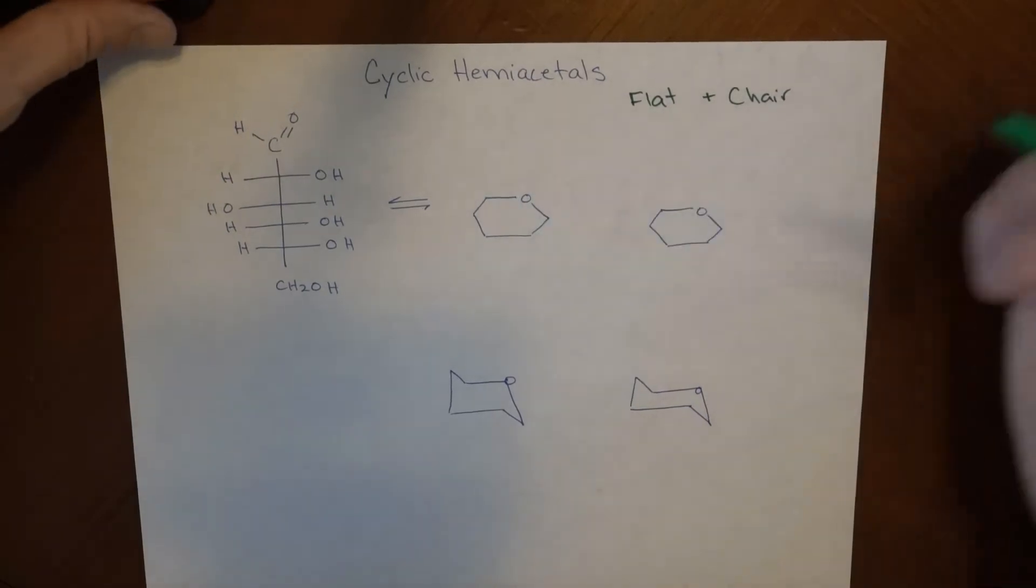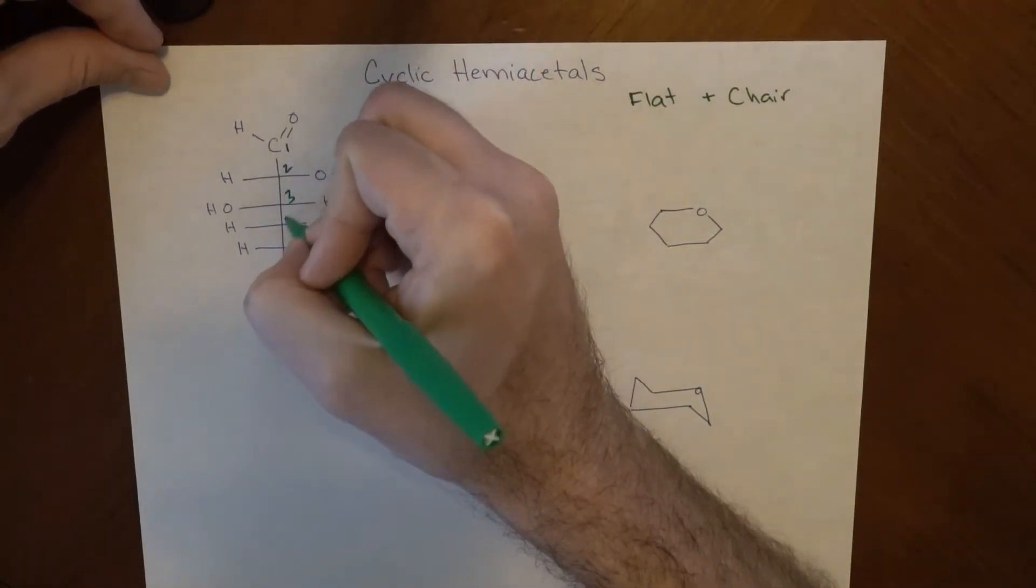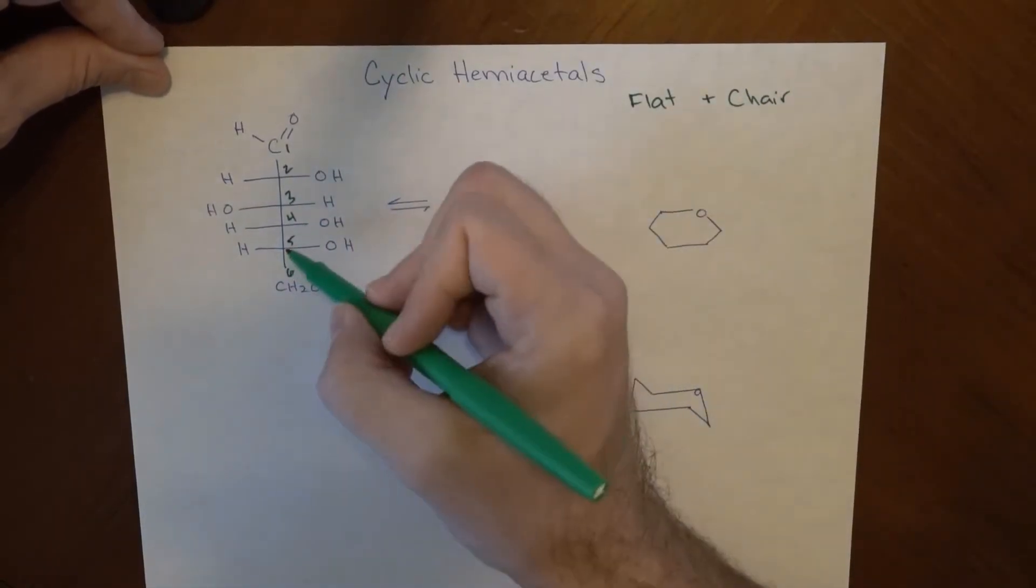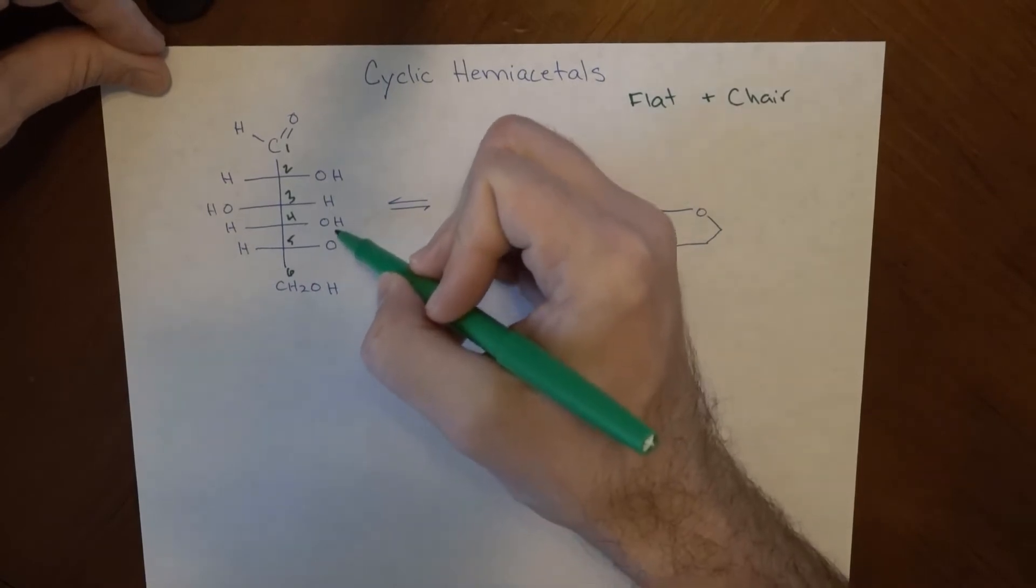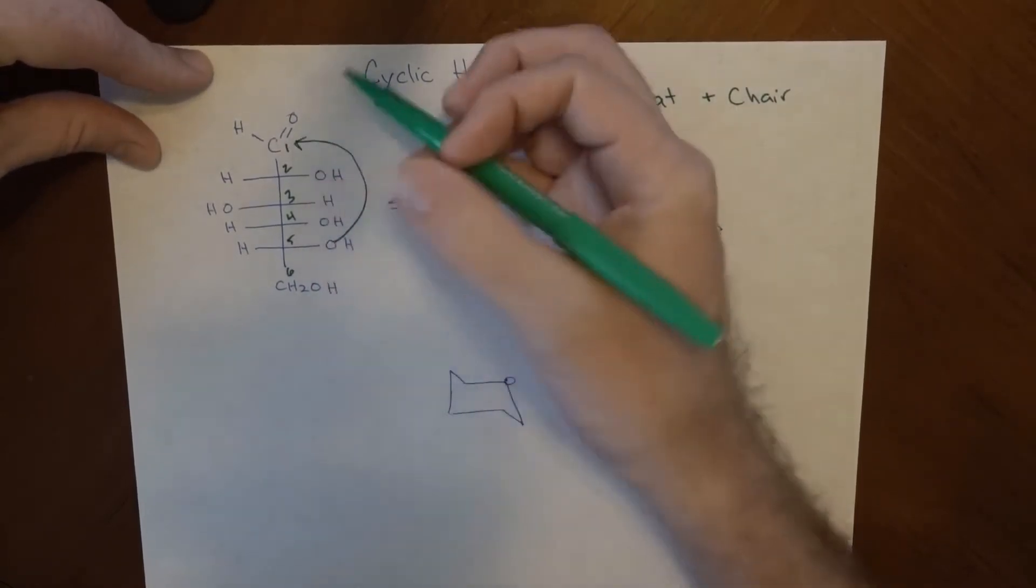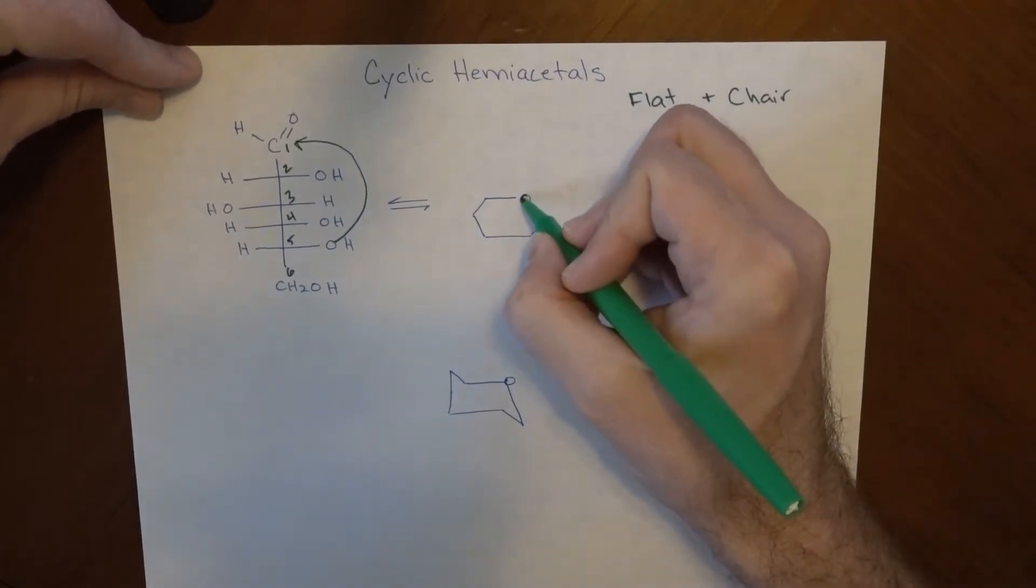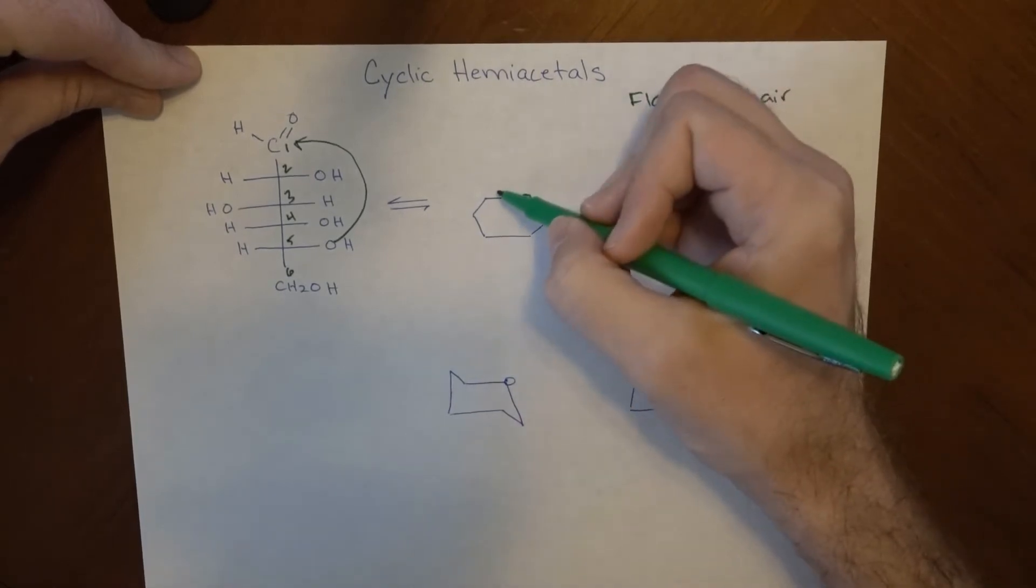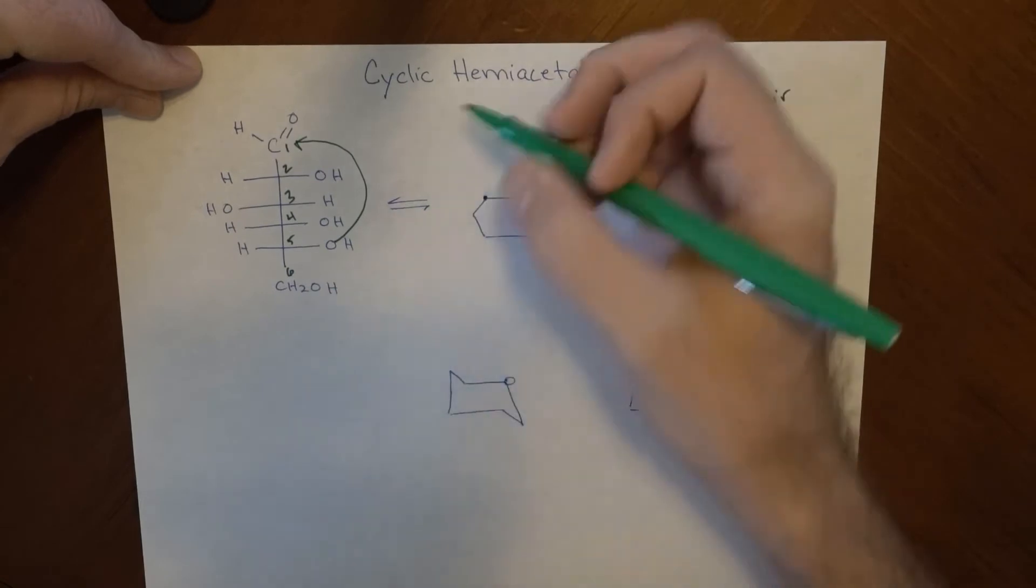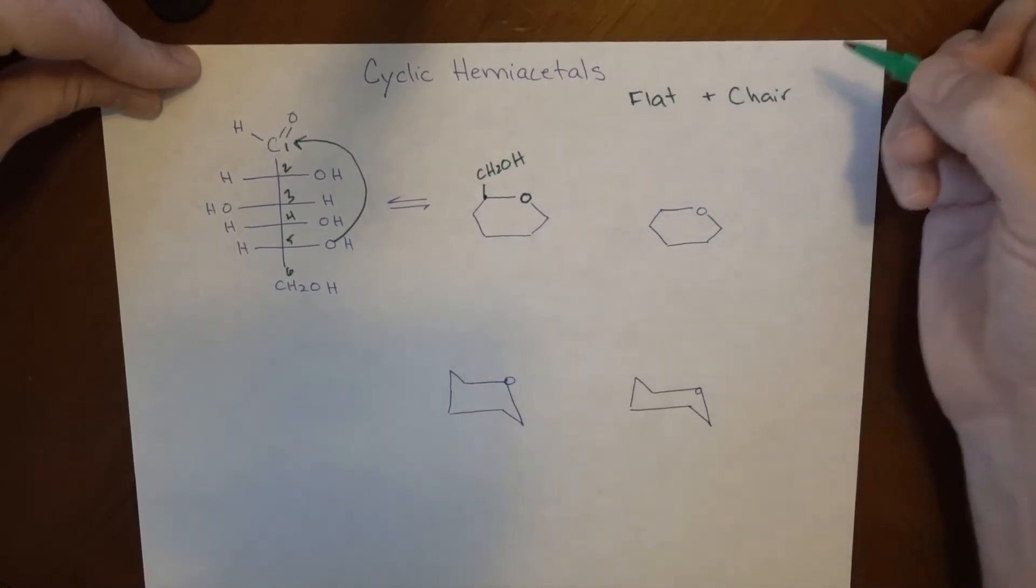Just to remind ourselves, if we consider this carbon 1, 2, 3, 4, 5, and 6 over here, it is the oxygen on carbon 5 that's going to end up attacking here. So we get a 6 membered ring and this oxygen becomes one of the members of that ring, and there it is right there. So carbon 5 is right here, and it has a CH2OH attached to it, and we almost always draw that in the upward position here like that.